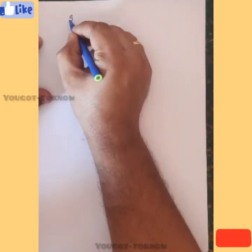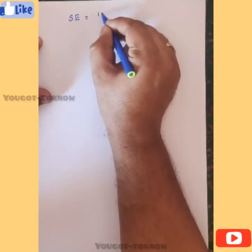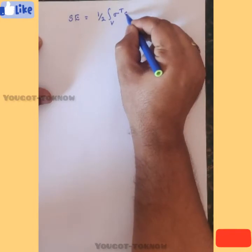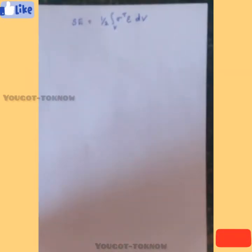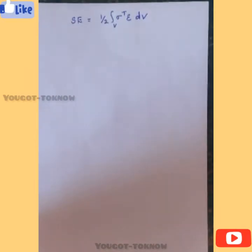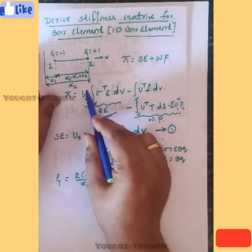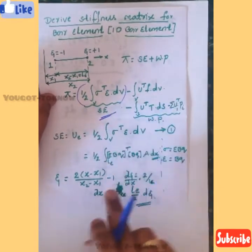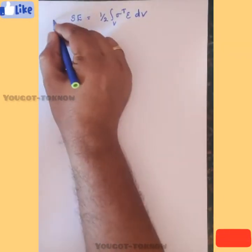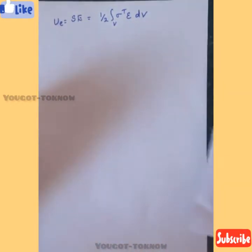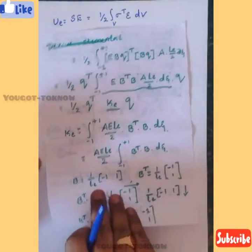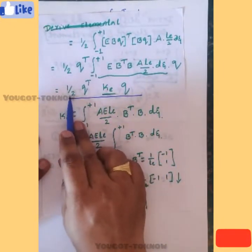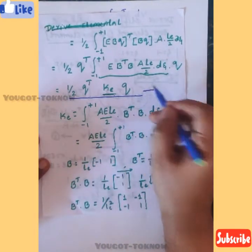Now, if you want to determine the stiffness matrix, we use strain energy. Strain energy UV equals (1/2) times the volume integral of sigma_transpose times epsilon dV. From the bar element derivation, this reduces to UV = (1/2) * q_transpose * K * q. I am directly using this expression: UV = (1/2) * q_dash_transpose * Ke_dash * q_dash, because this is a bar element in local coordinate system.